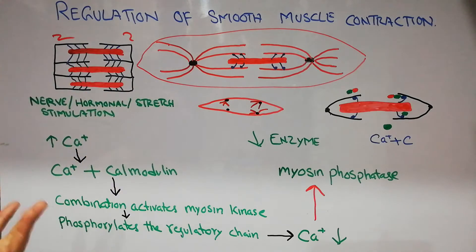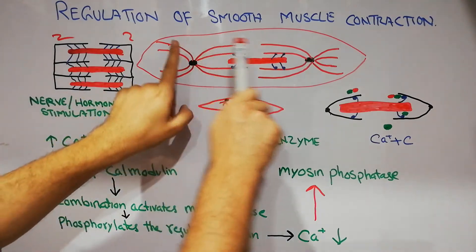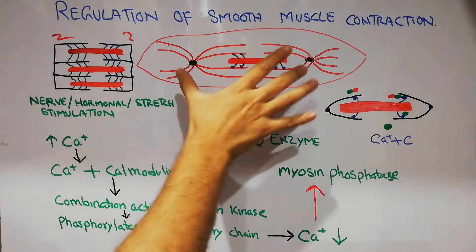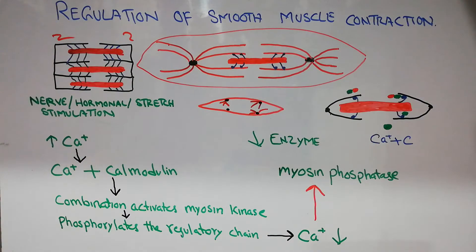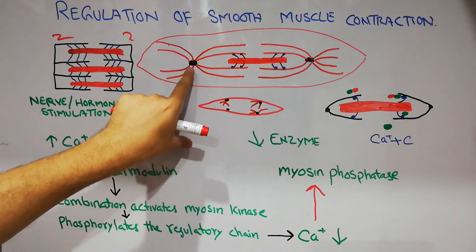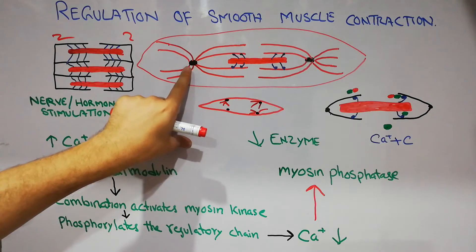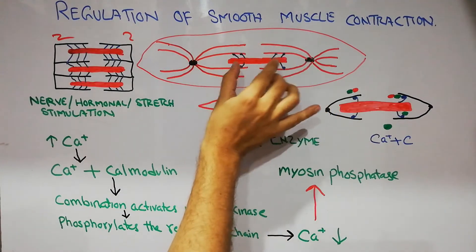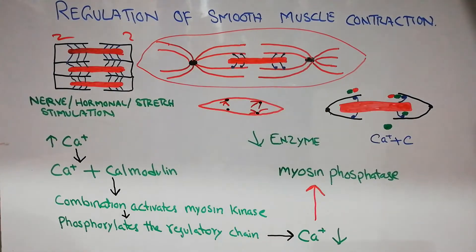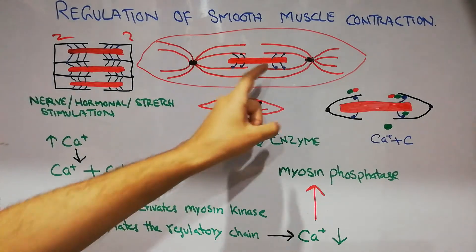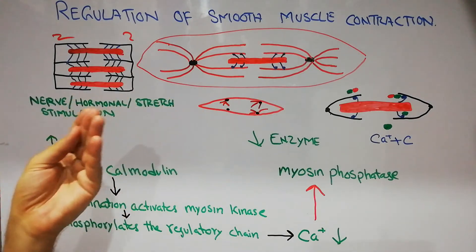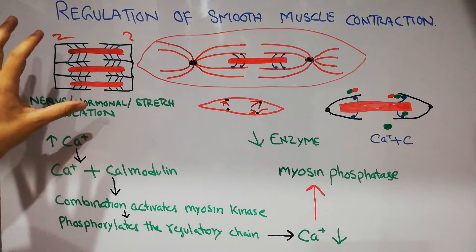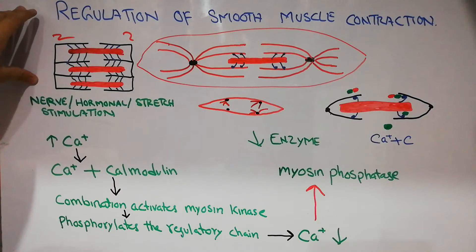In smooth muscles the arrangement of thick and thin filaments is slightly different. We have enlarged one contractile unit of a smooth muscle. There is a slight difference in the contractile unit because instead of Z-lines, we have two dense bodies in smooth muscles, from which the thin actin filaments arise. Between the actin filaments we have a thick filament, and from the thick filaments the cross bridges get attached to the thin filaments and pull them.